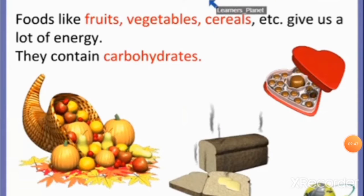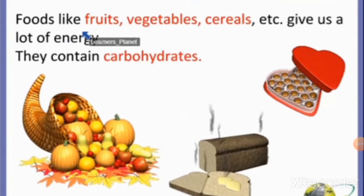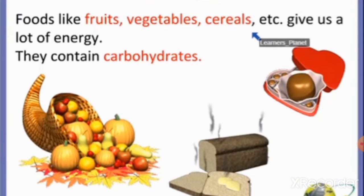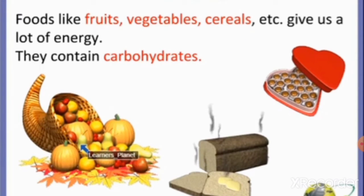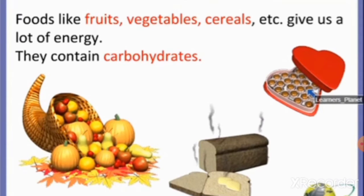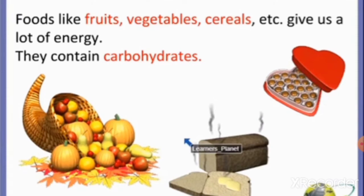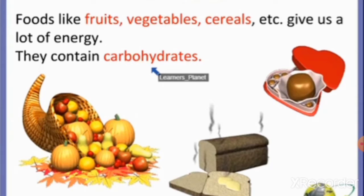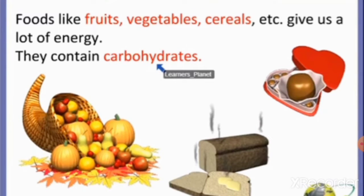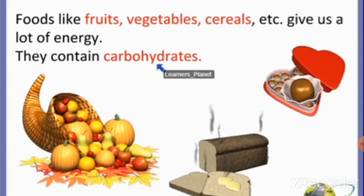Food items such as cereals like rice, wheat, and corn, and vegetables such as potatoes give us a lot of energy. They contain carbohydrate. Food items rich in carbohydrates are called energy-giving food. People who do a lot of physical work, such as laborers, farmers, and sportspersons, need a lot of carbohydrates to give them more energy.